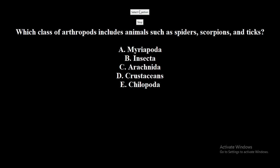Which class of arthropods includes animals such as spiders, scorpions, and ticks? A. Myriapoda. B. Insecta. C. Arachnida. D. Crustaceans. E. Chilopoda. The correct answer is Arachnida.